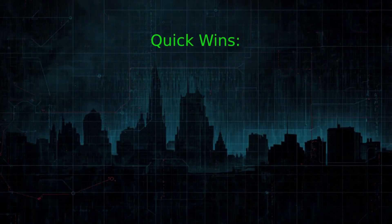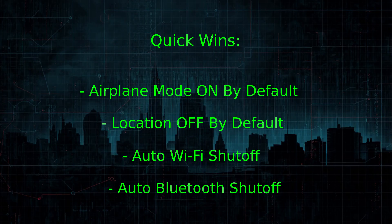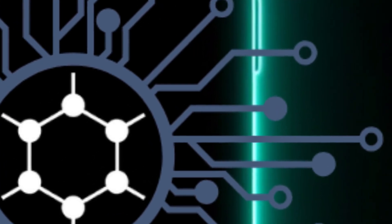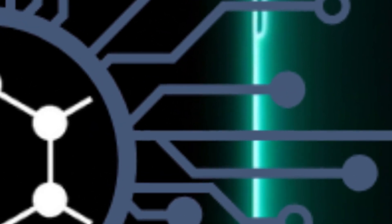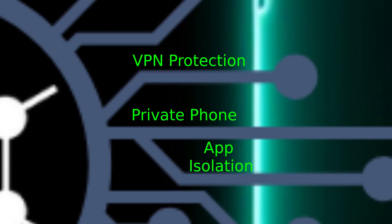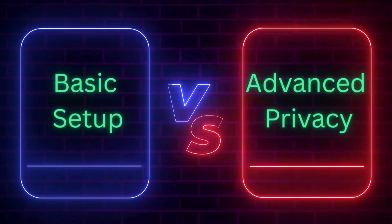Those are your quick wins: Airplane Mode by default, Location off, Auto Wi-Fi and Bluetooth shutoff. But if you want to take your privacy further, the next sections are where it gets really powerful — VPN protection, private eSIM and phone numbers, and app isolation. This is the stuff that separates a basic GrapheneOS setup from a truly private phone.